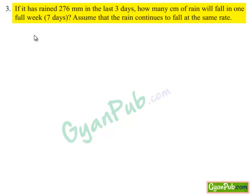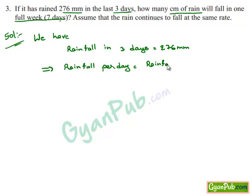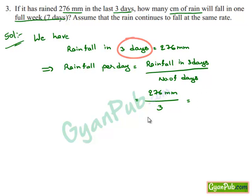Moving on to the third question. Given that it has rained 276 mm in the last 3 days, how many cm of rain will fall in 1 full week? Assume that the rain continues to fall at the same rate. We have rainfall in 3 days is equal to 276 mm. This implies rainfall per day is nothing but rainfall in 3 days divided by number of days, which is 276 mm divided by 3.